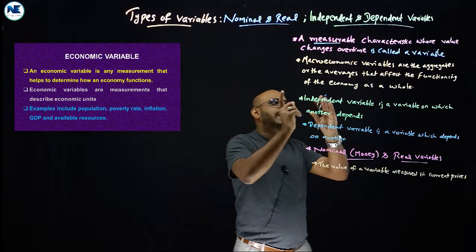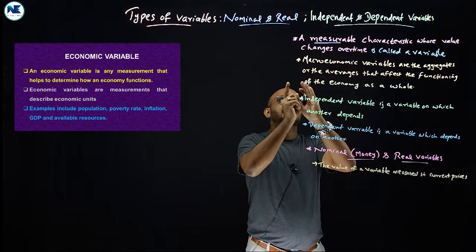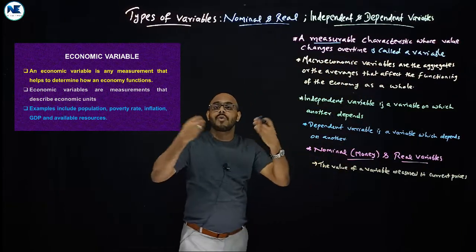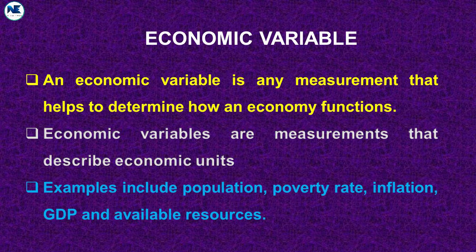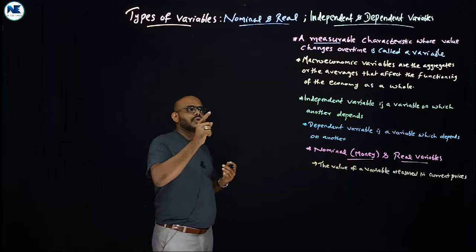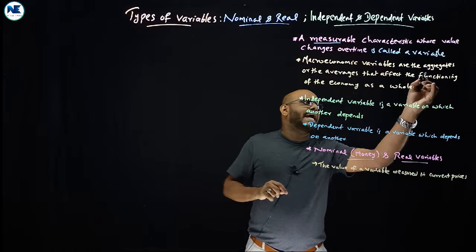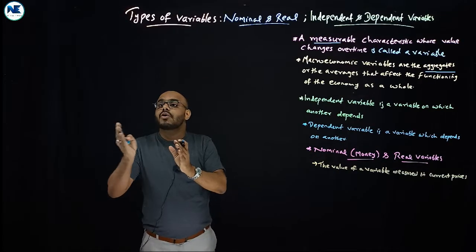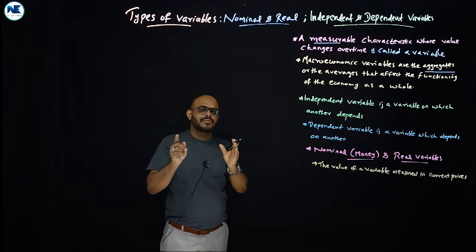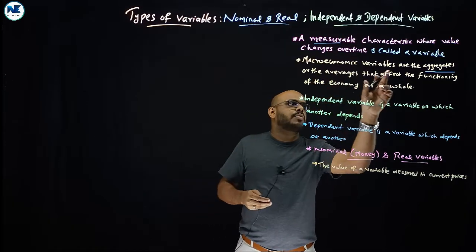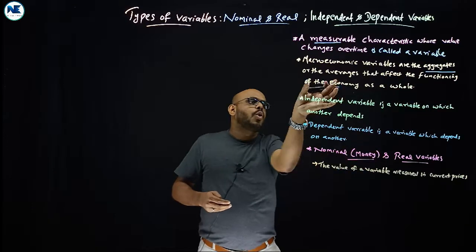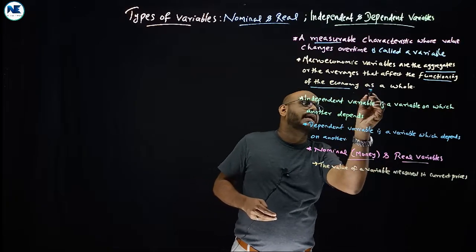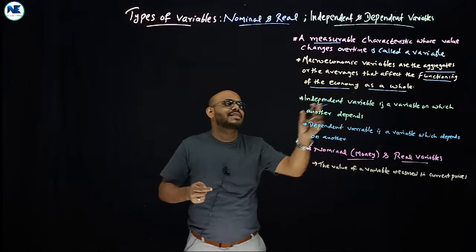So we can simply define: a variable is a measurable characteristic whose value changes over time. From a macroeconomic point of view, macroeconomic variables are the aggregates — because macroeconomics deals with the economy as a whole, or aggregate-level analysis. Macroeconomic variables are the aggregates or averages that affect the functioning of the economy as a whole.